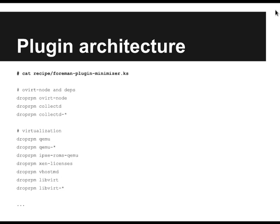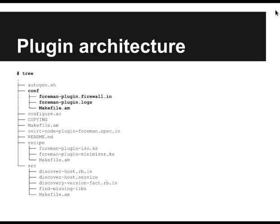Without those packages the discovery image is 180 megabytes; with them it's around 230–235 megabytes. It's not a huge issue since TFTP can be very slow, but we assume the image is served over the local network so size shouldn't be a problem. The conf subdirectory defines firewall ports that need to be open and log files. Those files are in our git repo with comments noting they are not currently in use — they're kept for clarity if you use our plugin as a template.